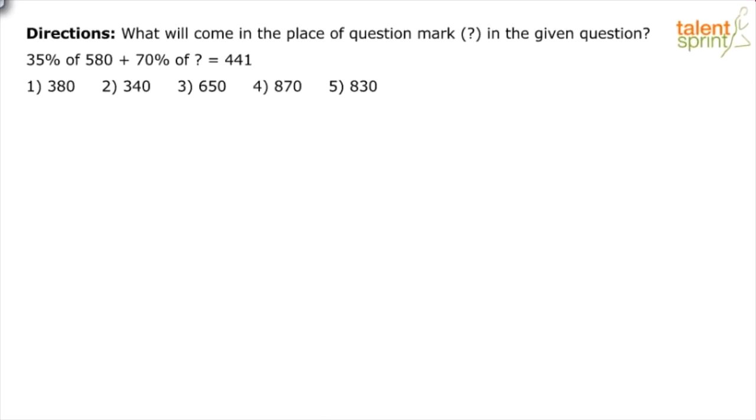Did you do the complete simplification or do you think there is a smarter way of getting the answer? Ishan says he has applied approximations. Kranti says he has taken 35% as 50% minus 15%. Prince has used split and merge. So looks like many of you are aware of smarter ways of doing it.